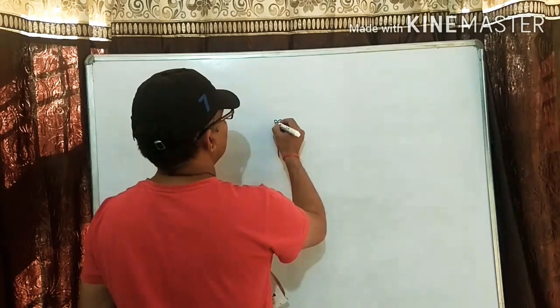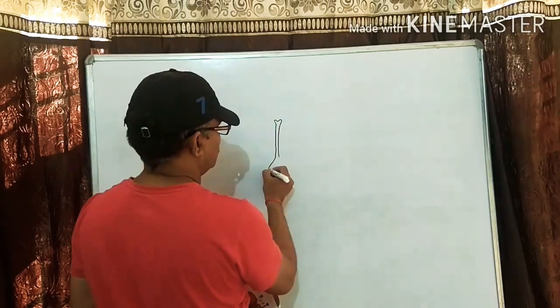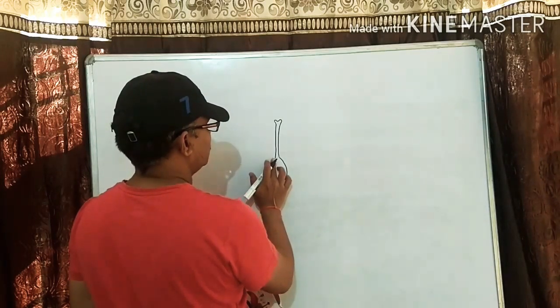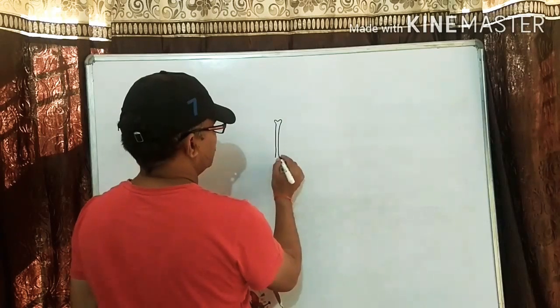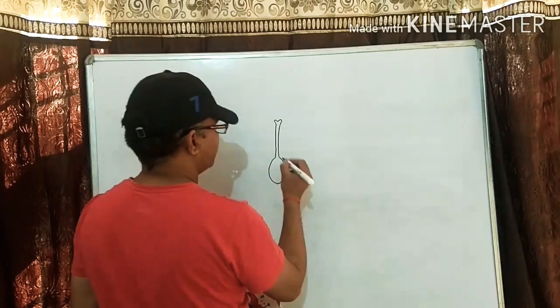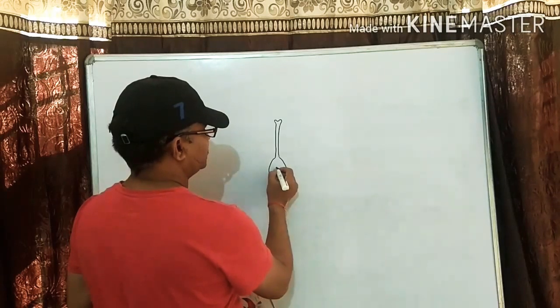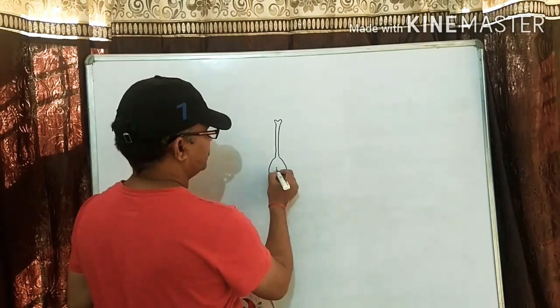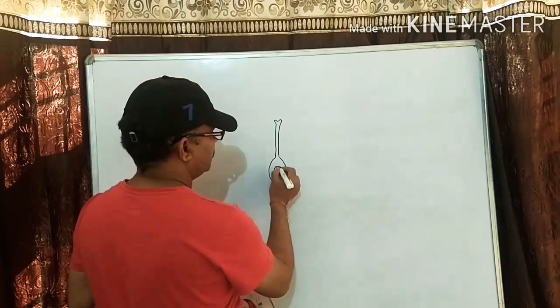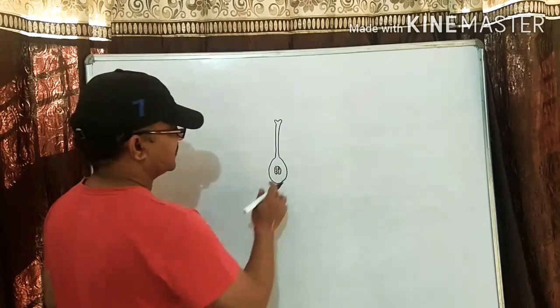First of all, you make this type of the carpel. Have you made it? Inside it, you make ovule. Clear?